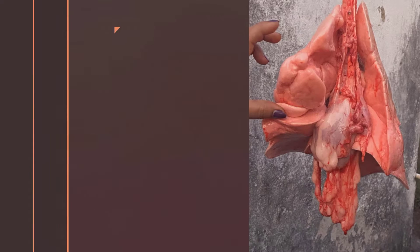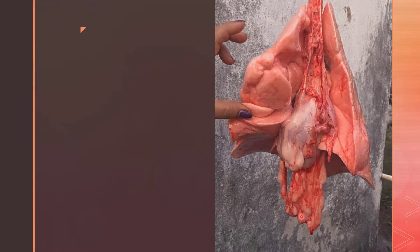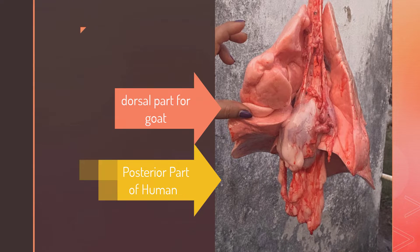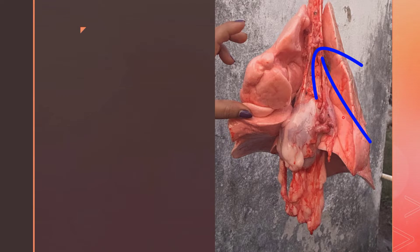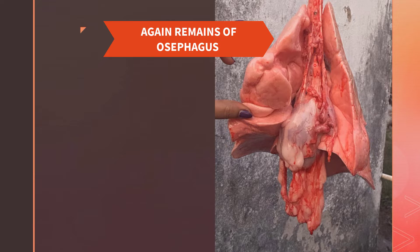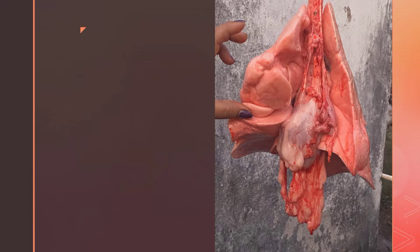This is the posterior part — in this goat it will be referred to as the dorsal part. Now carefully observe that hanging structure from the trachea. Yes, that's the esophagus, which I had already mentioned. The esophagus lies in close approximation to the trachea.